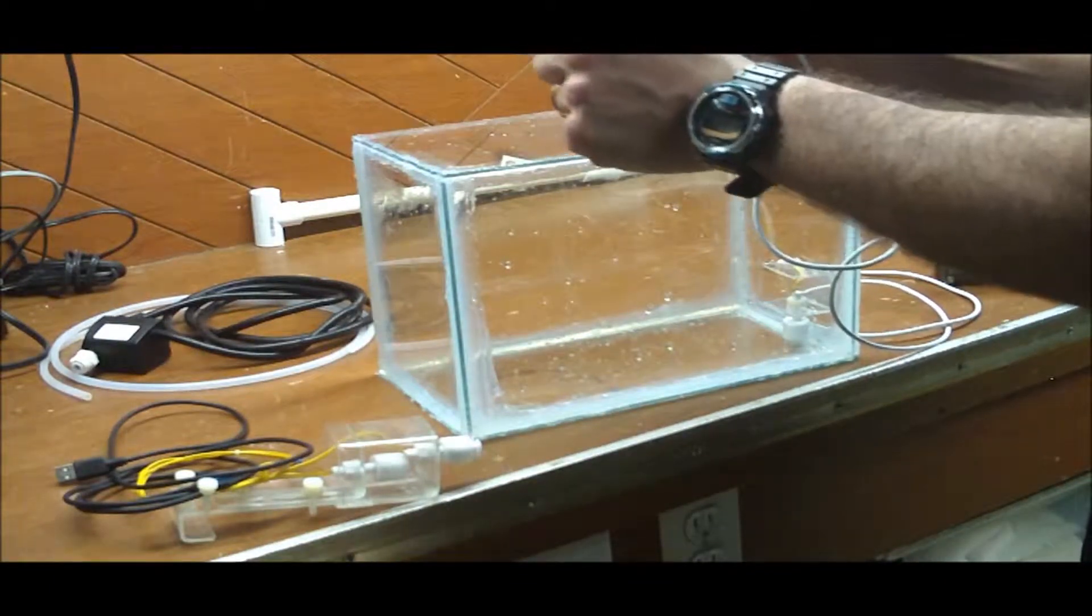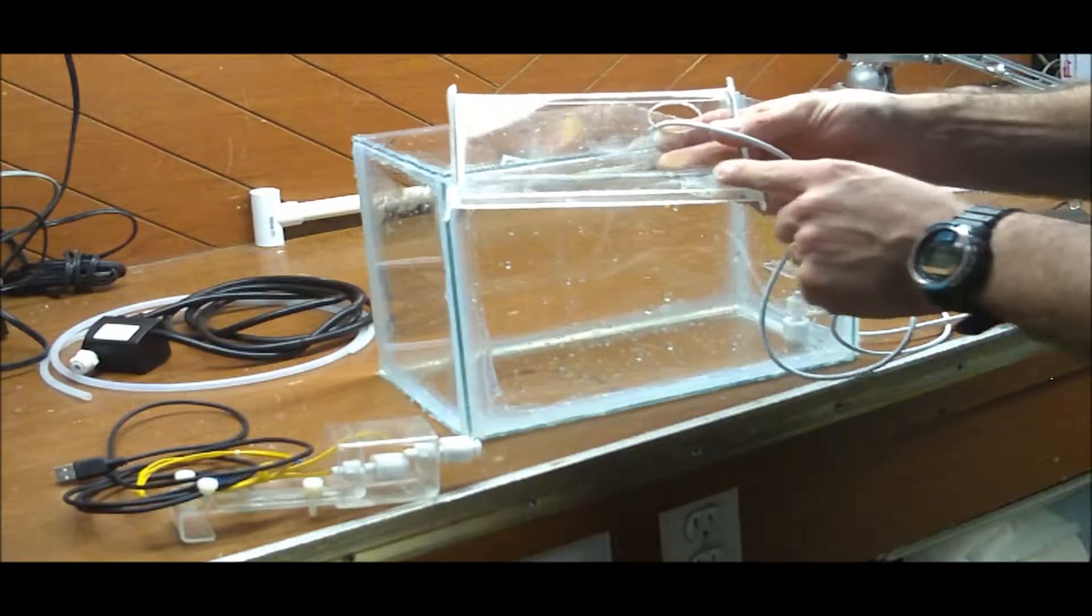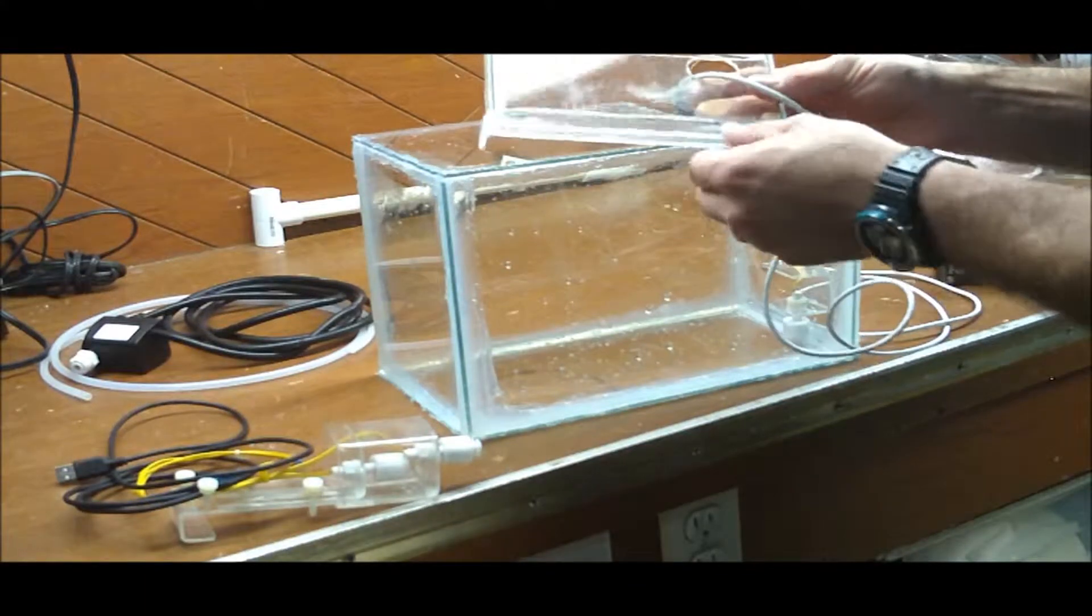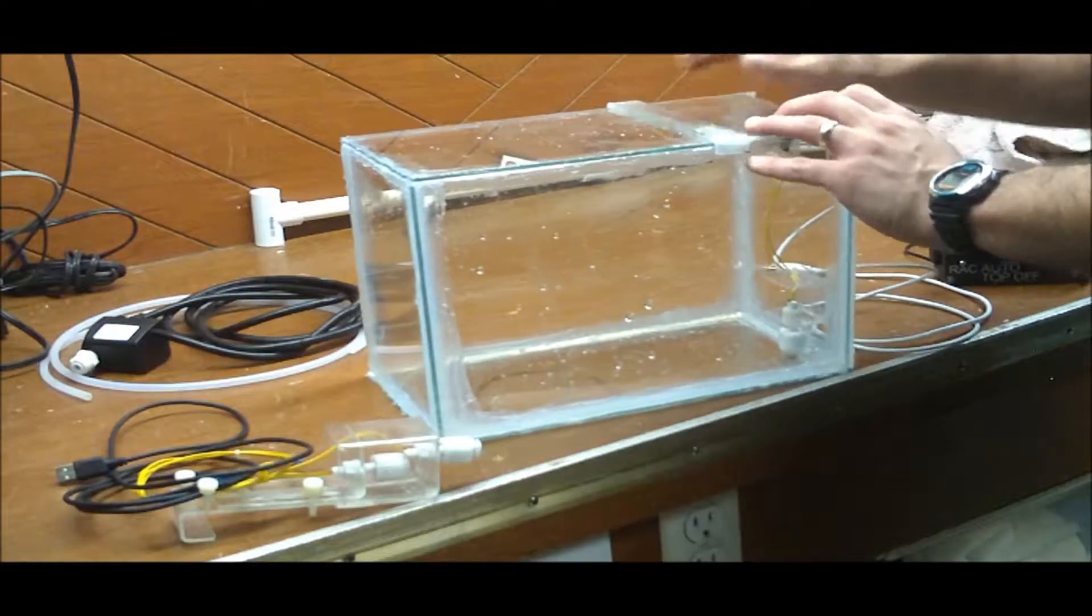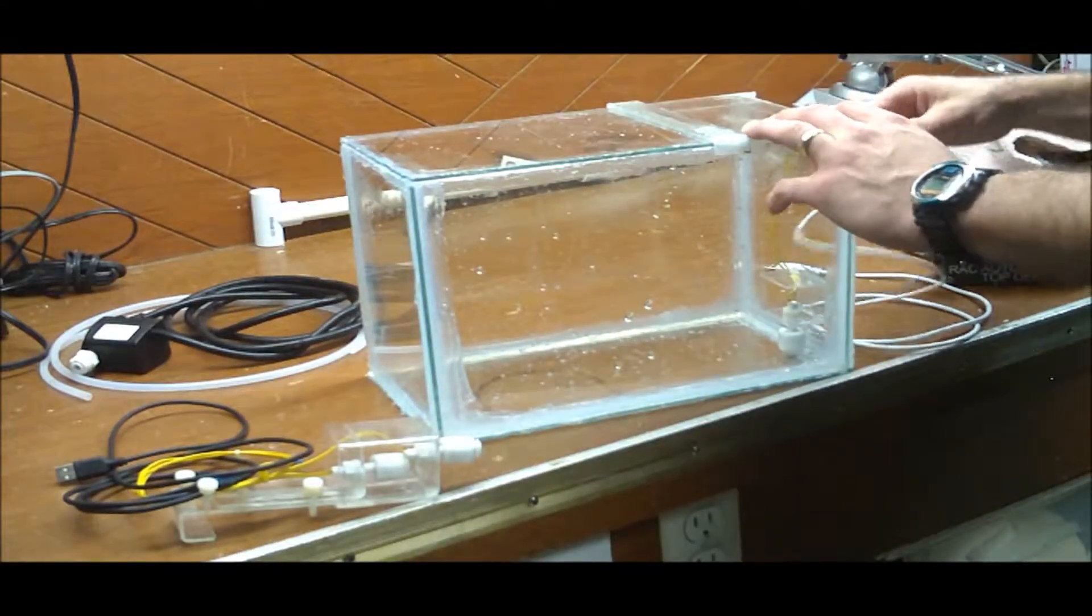And then I just actually used some PVC solvent right here to actually hold this little lip down. I'm trying to keep the evaporation down. I'm replacing the evaporated water. I don't want it to evaporate out of my auto top off.